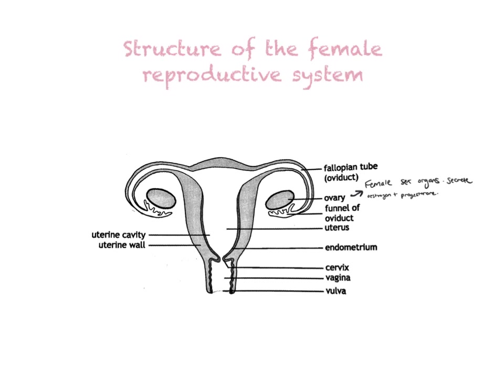Leading on from the ovaries, you have a structure called a fallopian tube, so you have two fallopian tubes. If you have your tubes tied as an older woman — tubal ligation — they tie the fallopian tube so that the egg cannot travel to the uterus and be fertilized. The fallopian tube can also be called an oviduct.